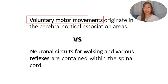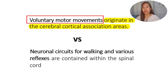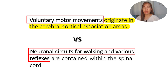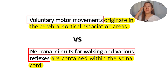Voluntary motor movements originate from the cerebral cortical association area - meaning they originate from the brain. We think about what we want to do. Versus the neuronal circuits for walking and various reflexes, which are contained within the spinal cord. There are reflexes and neuronal circuits already present in the spinal cord for walking and various reflexes, meaning we don't have to think about them. They do not come from the brain - there is a monosynaptic pathway already at the level of the spinal cord.